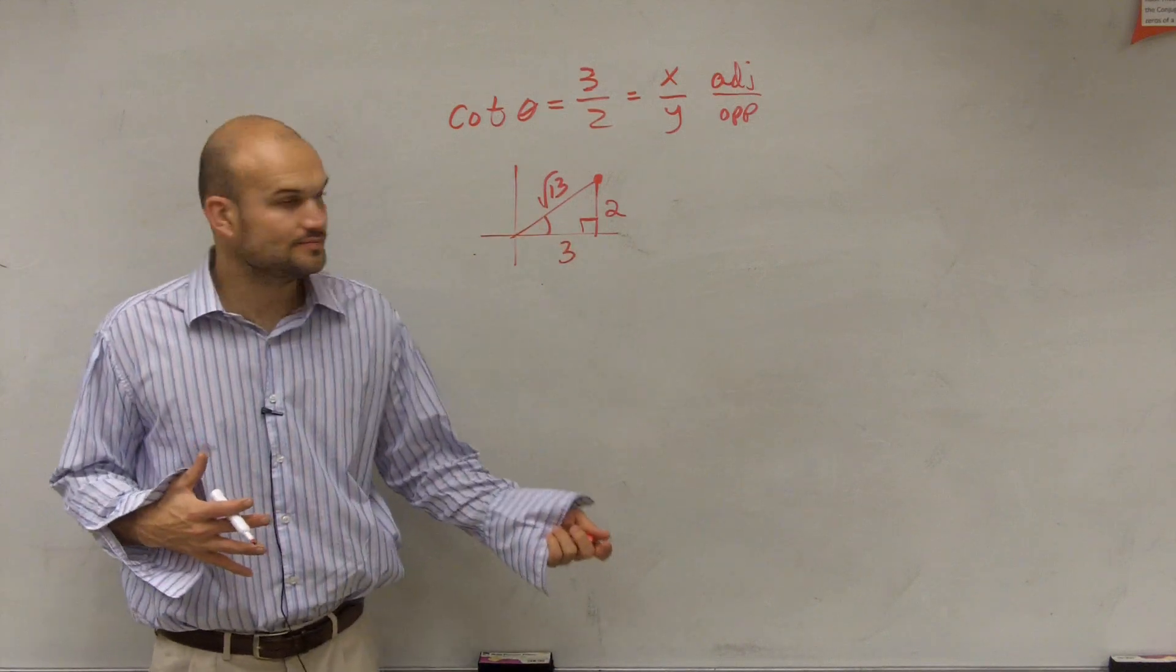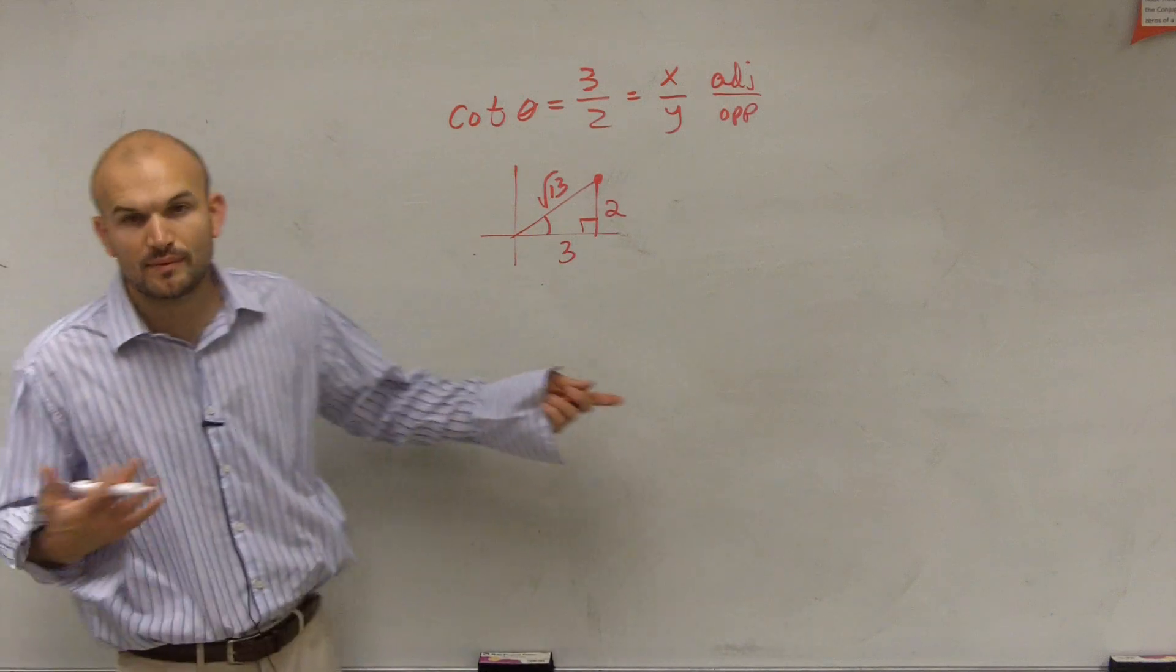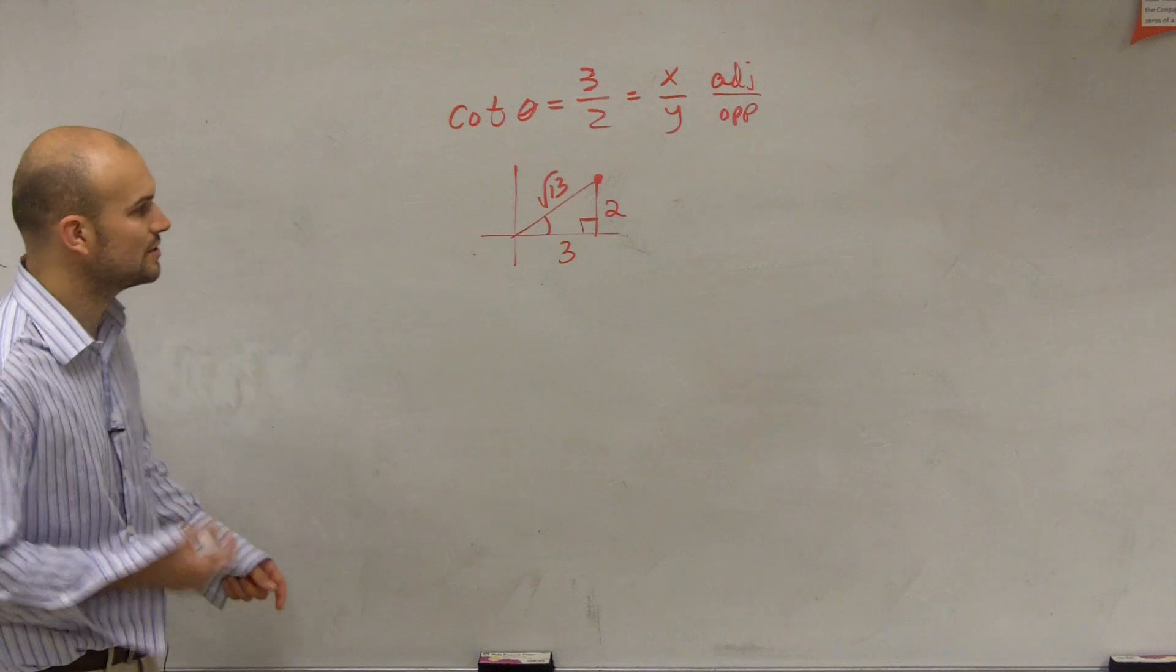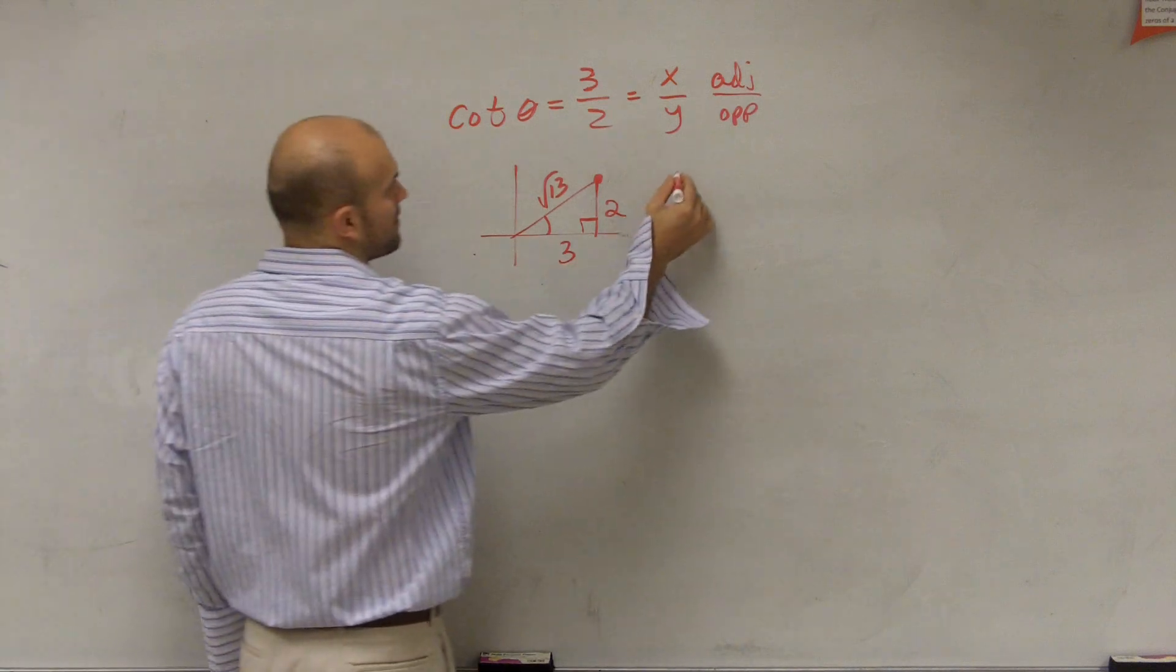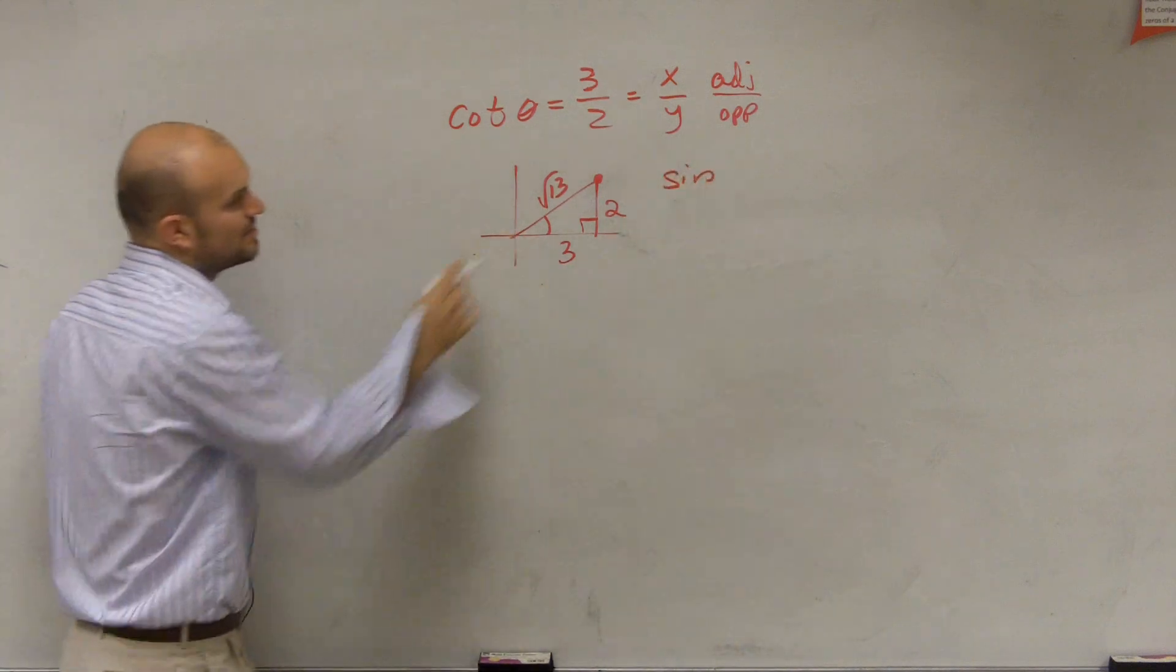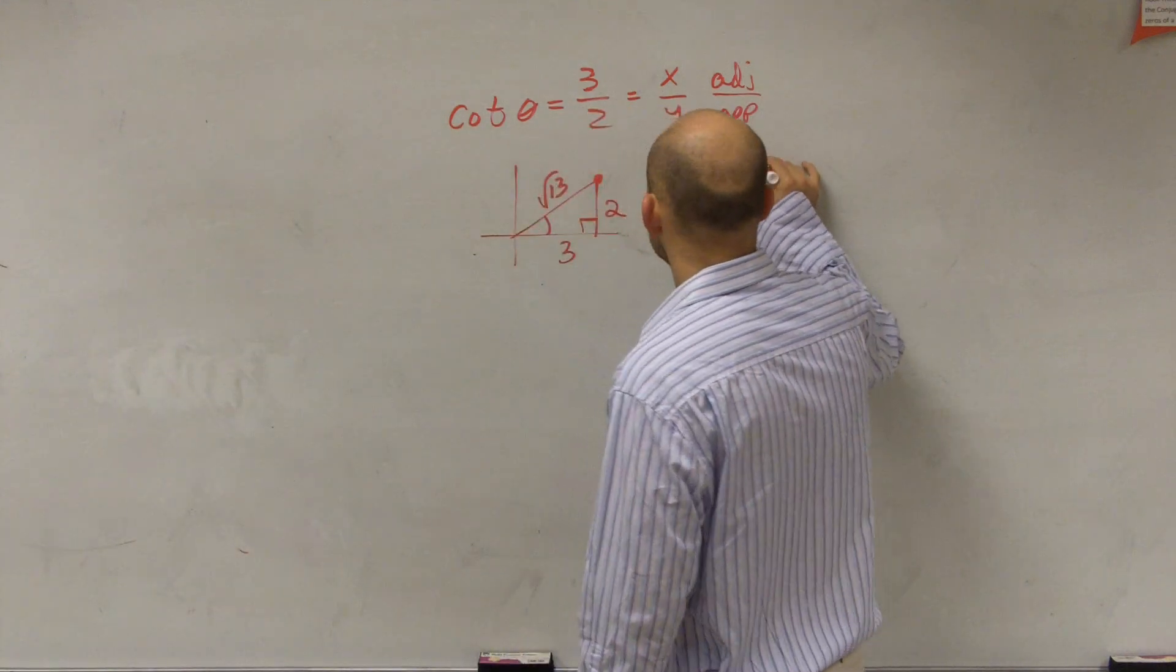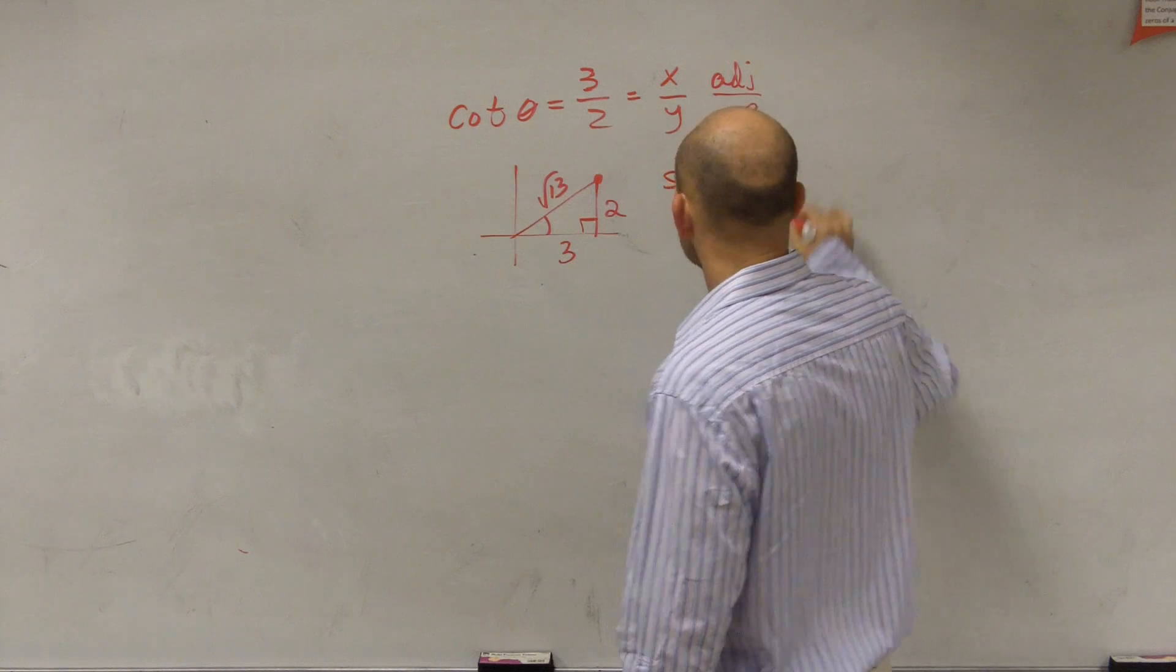So before, we could evaluate when we use the unit circle, but that was for points that were on the unit circle. Well, since we don't have it on the unit circle, to find our sine, remember that's going to be sine is opposite over hypotenuse. So sine of theta equals 2 over square root of 13.